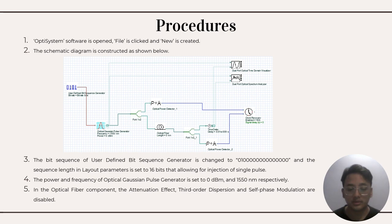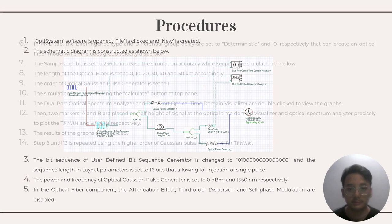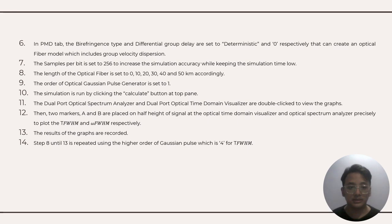The sequence length in the layout parameter is set to 16 bits, allowing for injection of a single pulse. The power and frequency of the optical Gaussian pulse generator are set to 0 dBm and 550 nanometers respectively. In the optical fiber component, the attenuation effect, group velocity dispersion, and self-phase modulation are disabled. In the PMD tab, the birefringent style and the differential group delay are set to deterministic and zero respectively, creating an optical fiber model which includes group velocity dispersion.